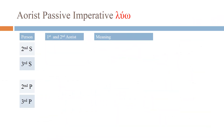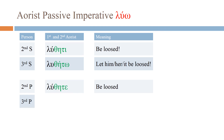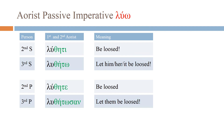Finally, the aorist passive imperative of luo. The aorist has only one passive — whether first or second aorist, they use the same passive form. Second singular (both first and second aorist): luthēti — meaning 'be loosed.' Third singular: luthētō — 'let him/her/it be loosed.' Second plural: luthēte — 'be loosed.' Third plural: luthētōsan — 'let them be loosed.'